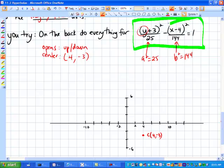And you'll notice here that I've already identified that this first term is a squared. So that means that a is equal to 5 and b squared tells me that b is 12.